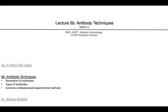Hello, this is lecture 6b, the second lecture for our week 6 module on experimental methods used in immunology research. Today we will talk about antibodies, which are a very widely used tool that form the basis of many types of methods or assays used in research. We will start by talking about how antibodies for research applications are generated, the different types of antibodies that you can make and use for experiments, and lastly go over several common lab assays that make use of antibodies.